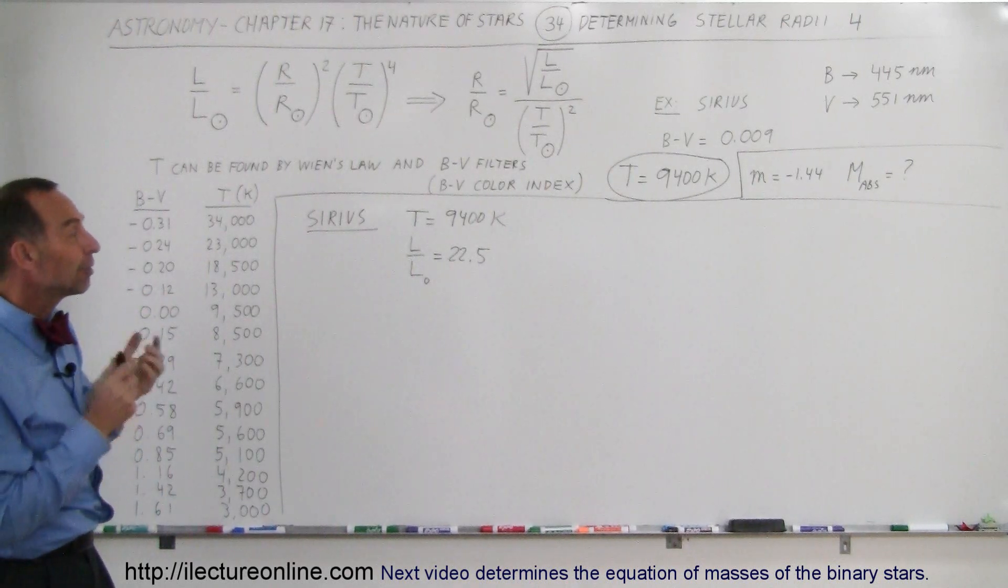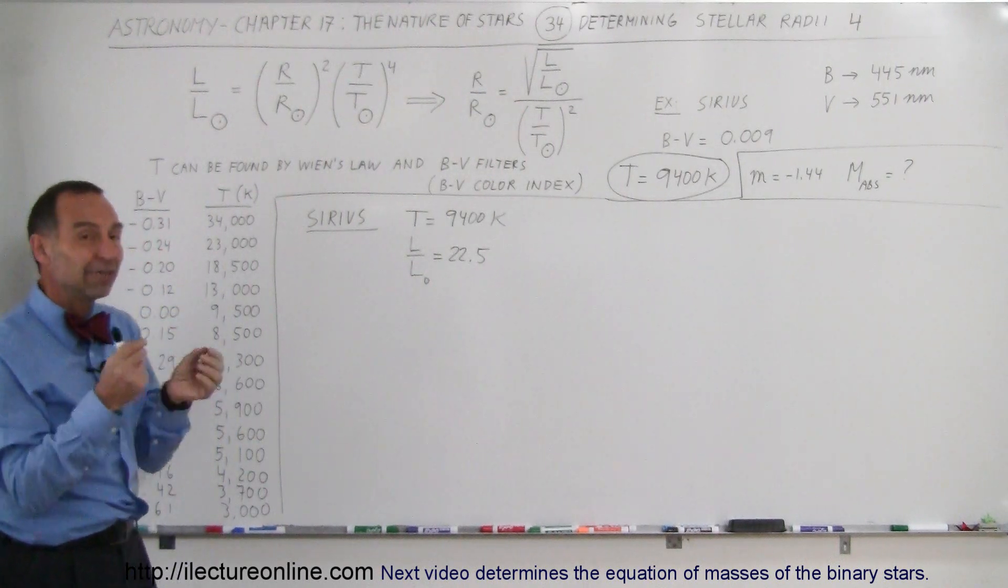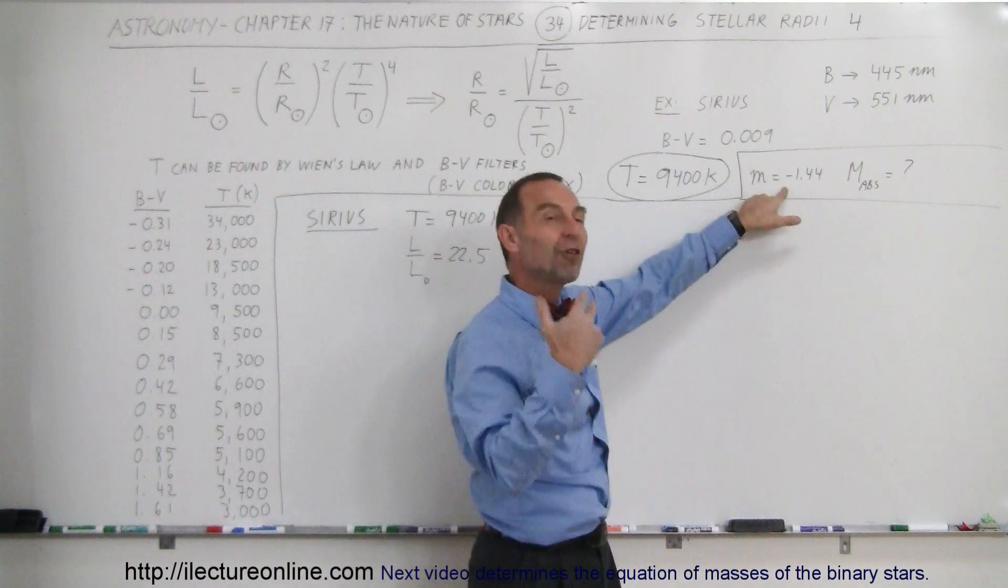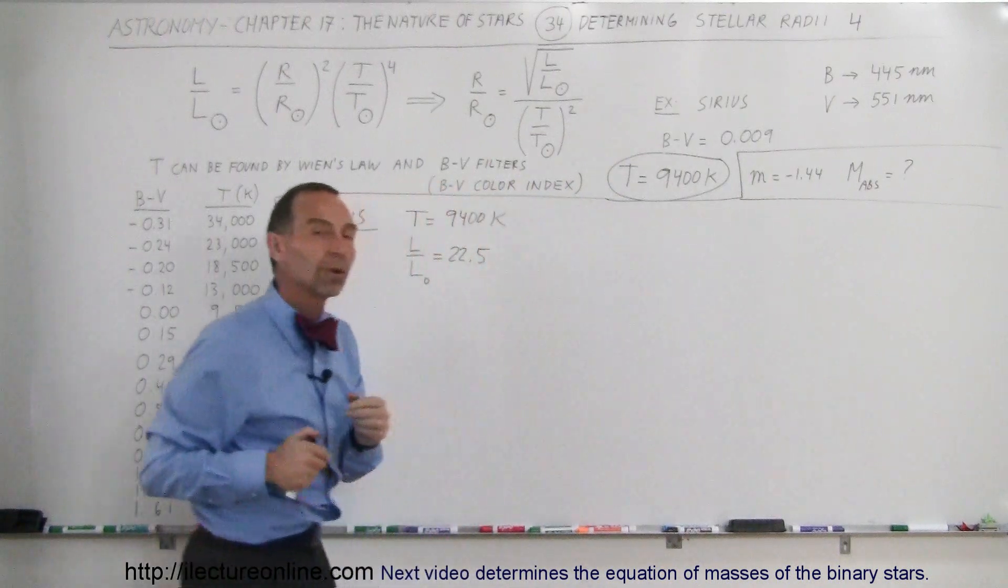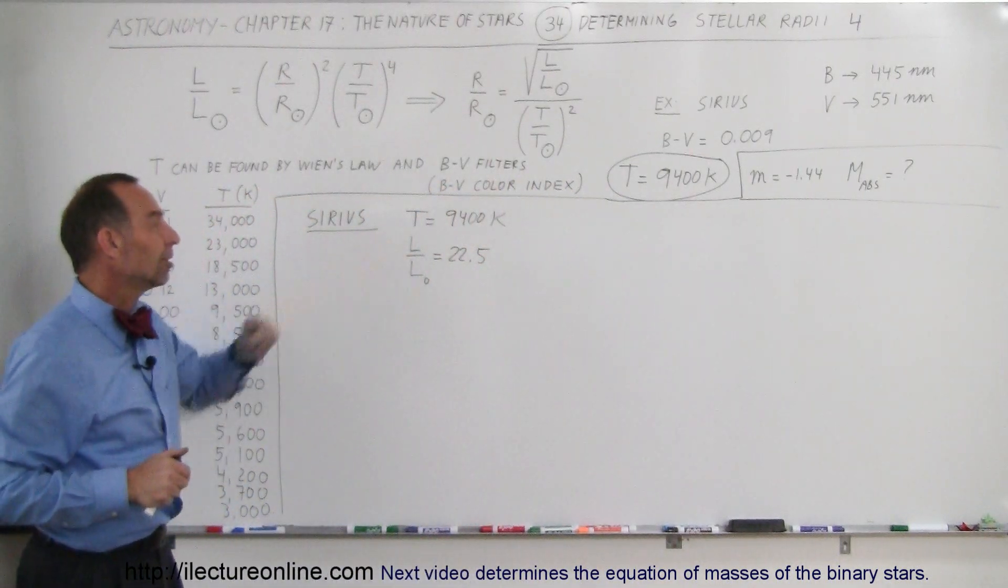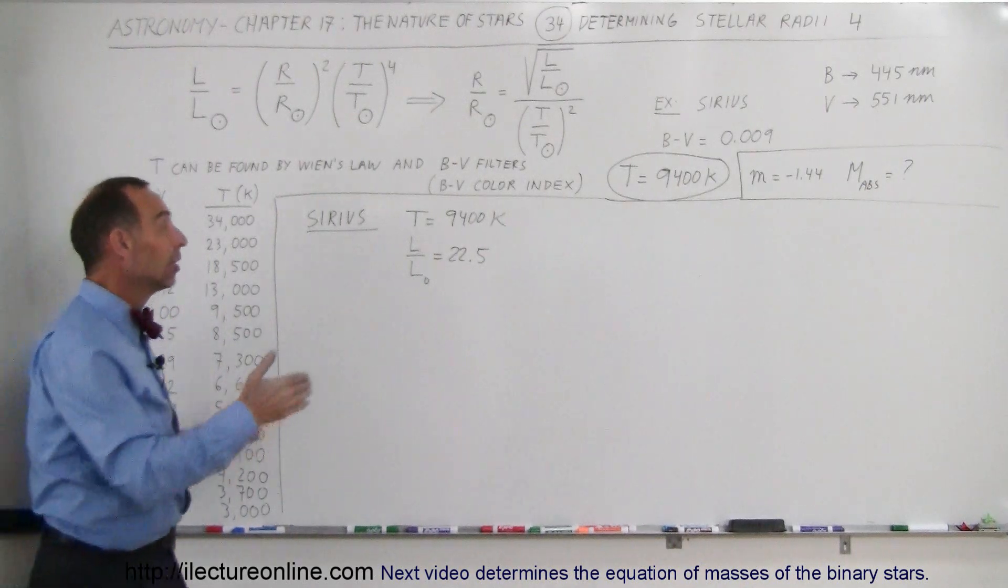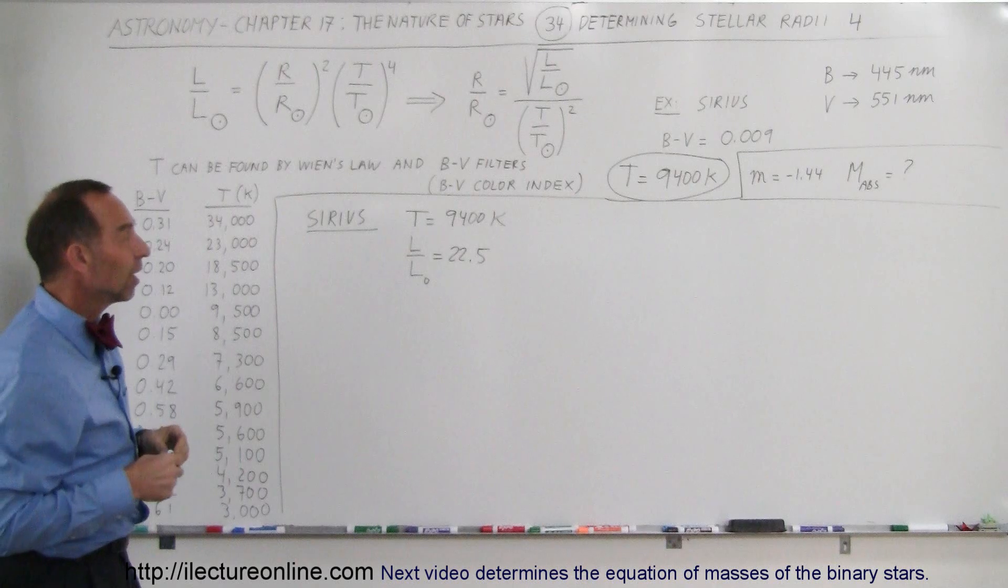Secondly, we were able to find the ratio of the luminosity of Sirius to luminosity of Sun based upon the apparent magnitude, figure out how far the star was, and figure out the absolute magnitude. Then we figured out the luminosity relationship between Sirius and the Sun, which turned out to be 22.5, so Sirius is 22 and a half times as luminous as the Sun.